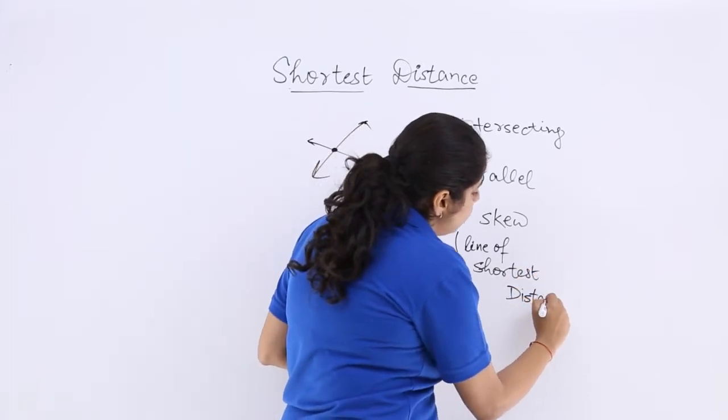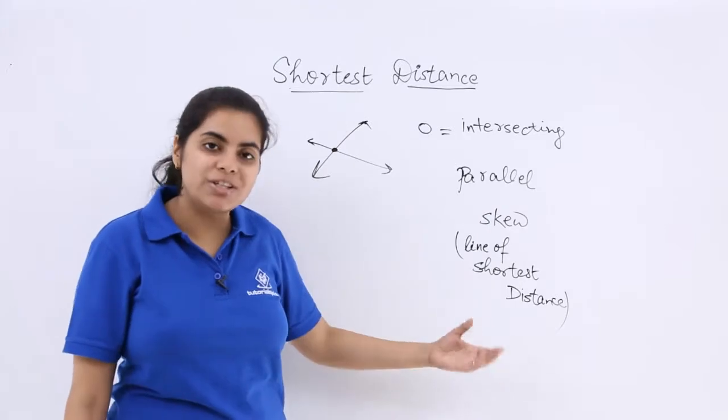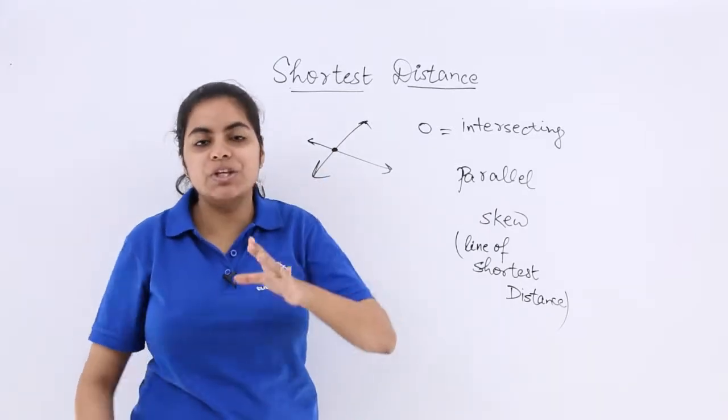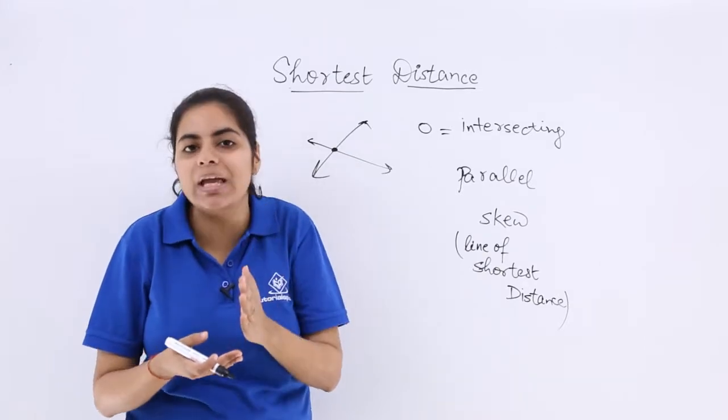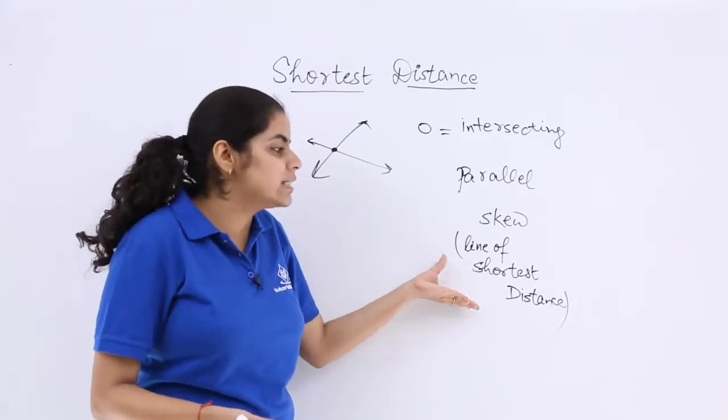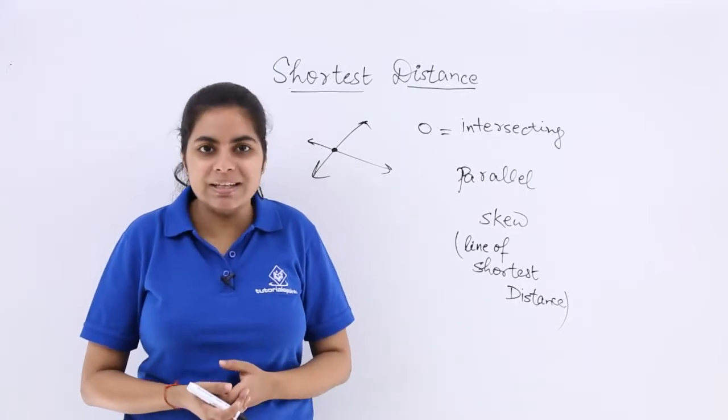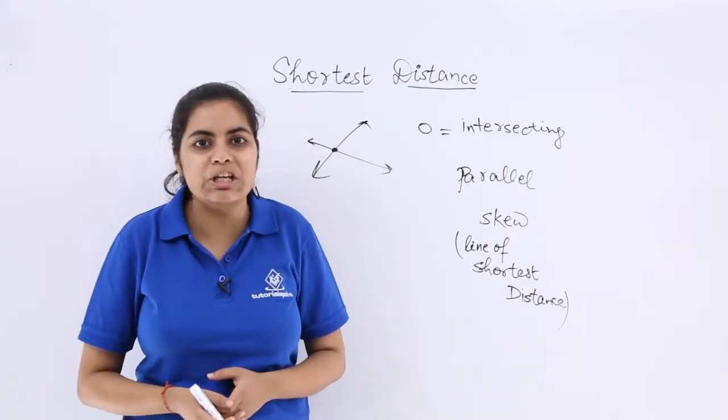So in skew lines also there is a shortest distance on which we have questions also, and the line joining these two skew lines in order to make the shortest distance is called as the line of shortest distance. If still not understood, let's watch the next video based on line of shortest distance.